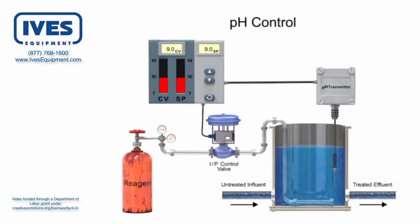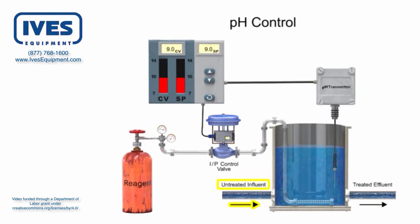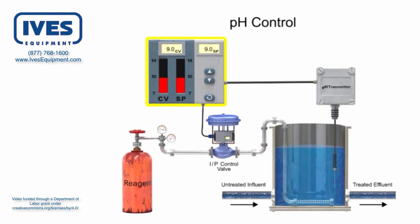An example of an automatic pH level control system is a water treatment process where lime-softened water is maintained at a pH of 9 using carbon dioxide as a reagent. As the untreated water or influent enters the tank, the pH is continuously monitored by the pH sensor. The sensor is the feedback device to the controller where the setpoint is compared to the control value.